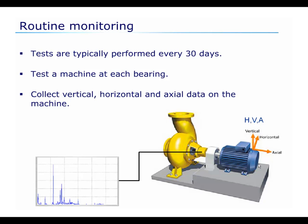Tests are typically performed every 30 days. A test at a machine is typically done at each bearing point. And because the machines move in three directions, we typically look at data in the vertical, horizontal, and axial directions so that we can help pinpoint which way the vibration is the most severe. We'll stop here and continue later.